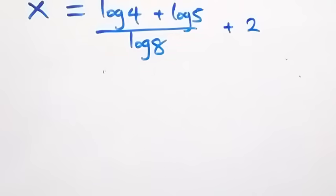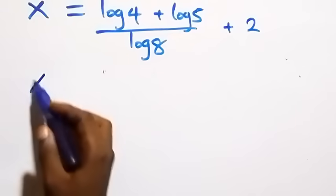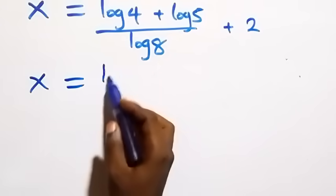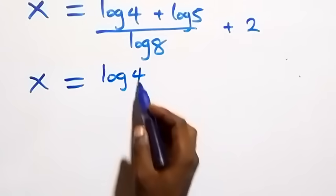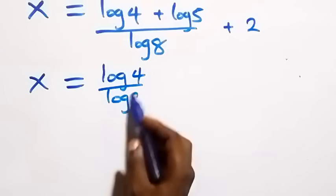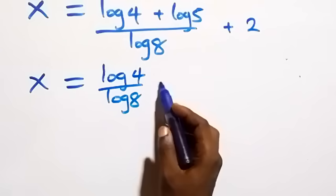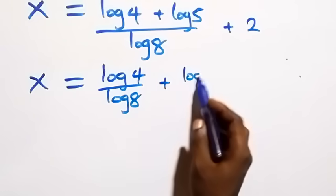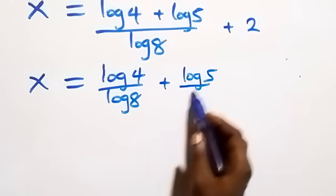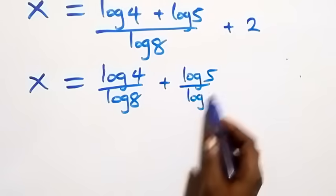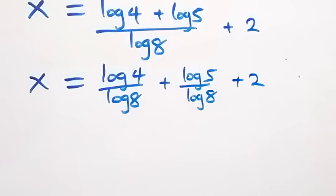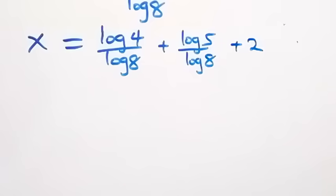We separate this into two fractions: x equals log 4 over log 8, plus log 5 over log 8, plus 2.